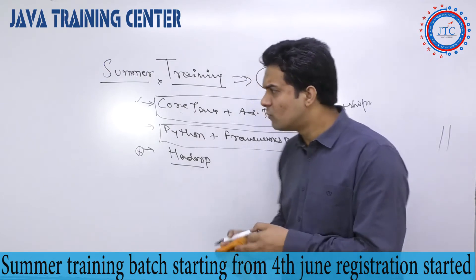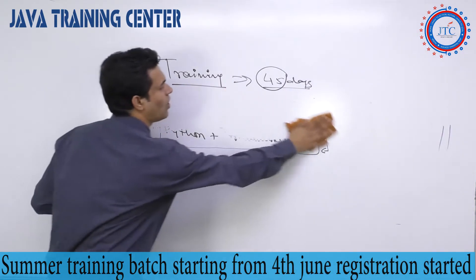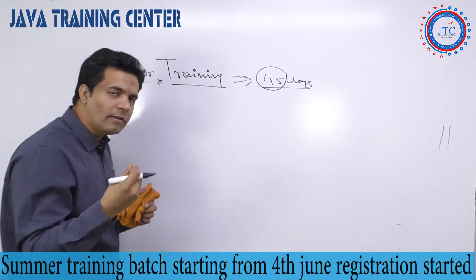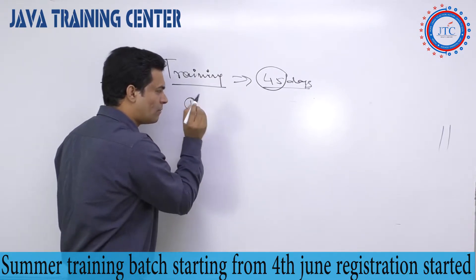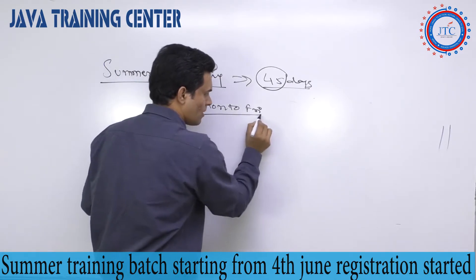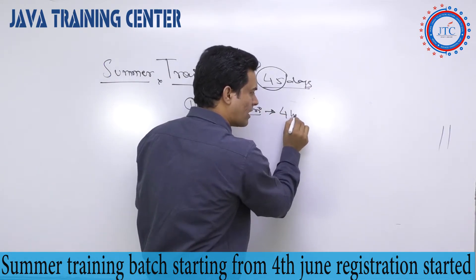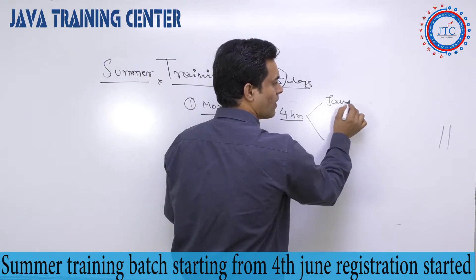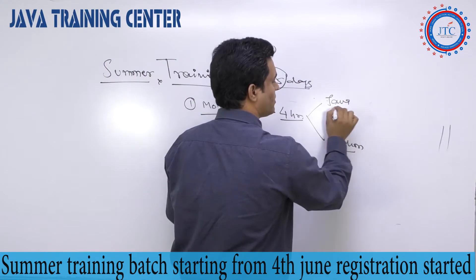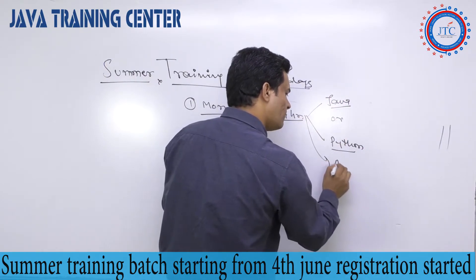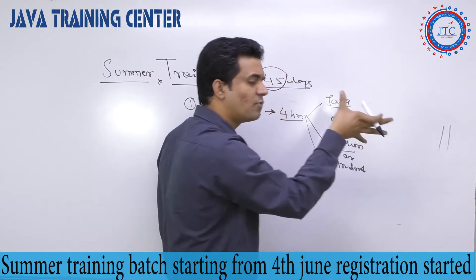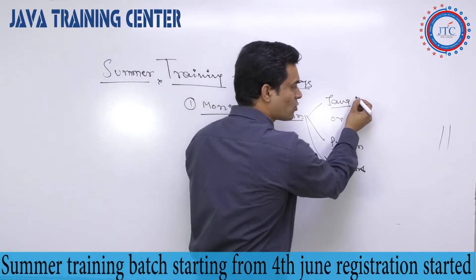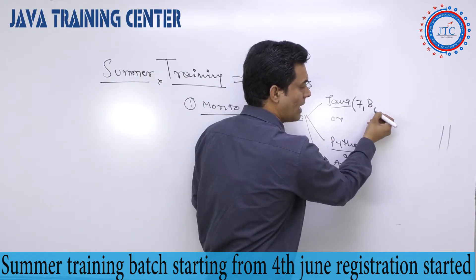In this summer training, what we have planned to give you proper knowledge: in this 45-day time, we think one or one-and-a-half hours is very less time. So what we are planning is Monday to Friday, four hours of class every day — whether you are going for Java, Python, Android, or whatever technology you choose, four hours of class per day.